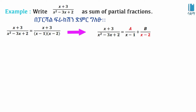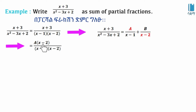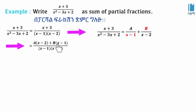So (x + 3) over (x - 1)(x - 2) equals A over (x - 1) plus B over (x - 2). Multiplying through by the common denominator (x - 1)(x - 2), we get A times (x - 2) plus B times (x - 1) equals x + 3.